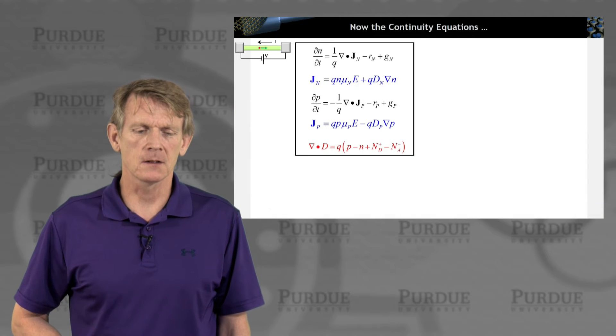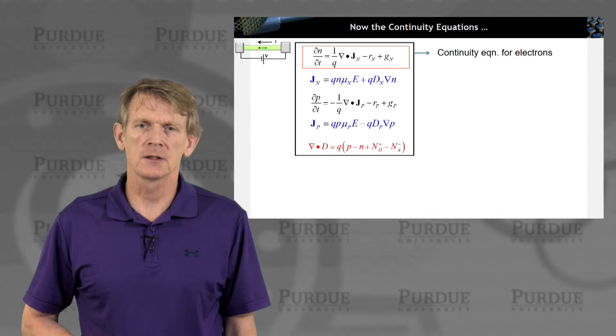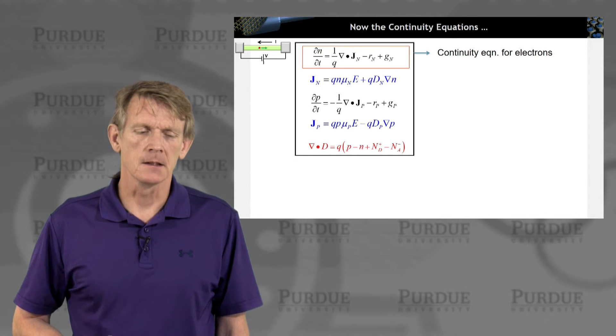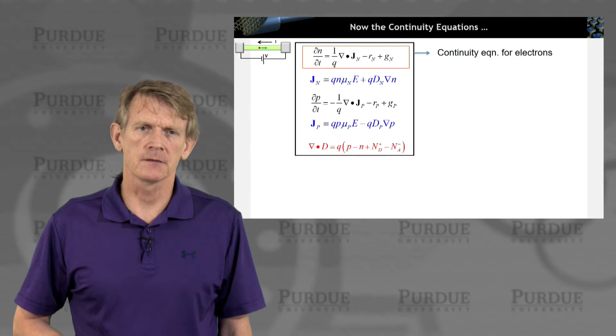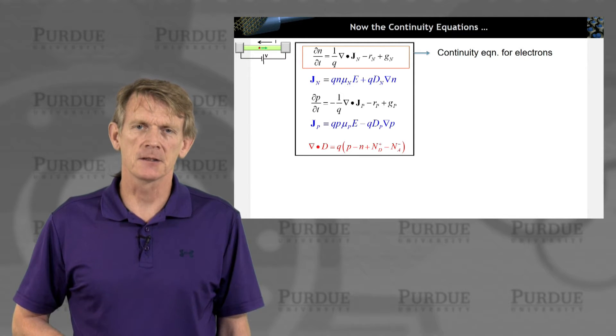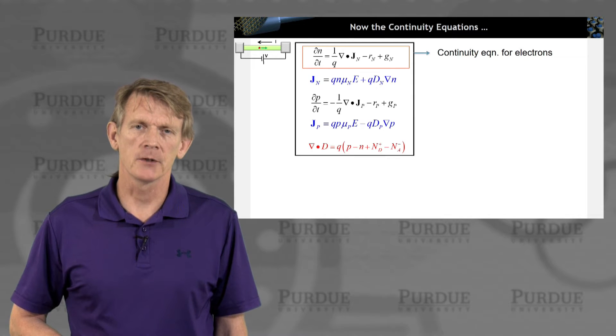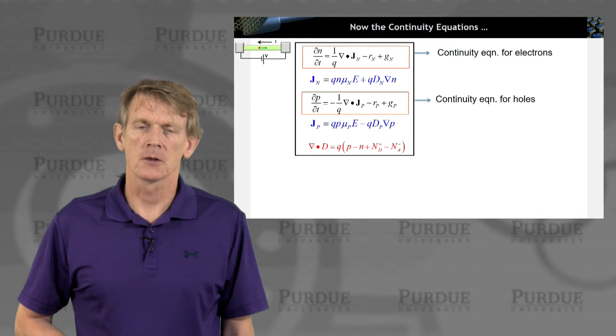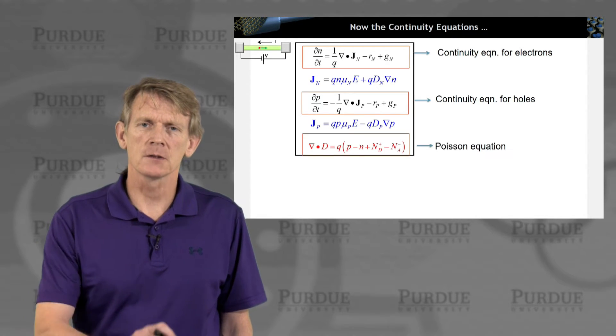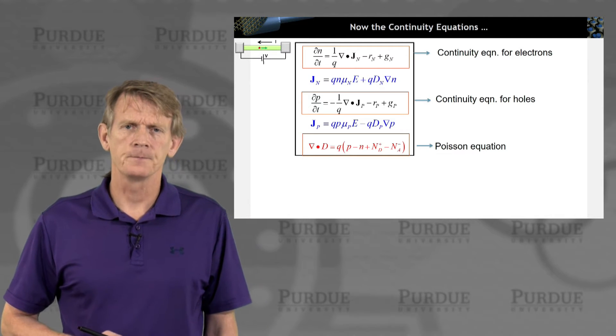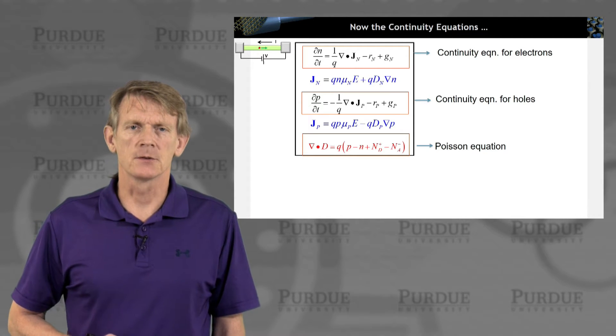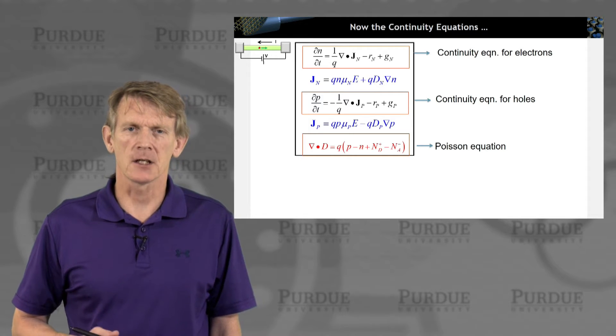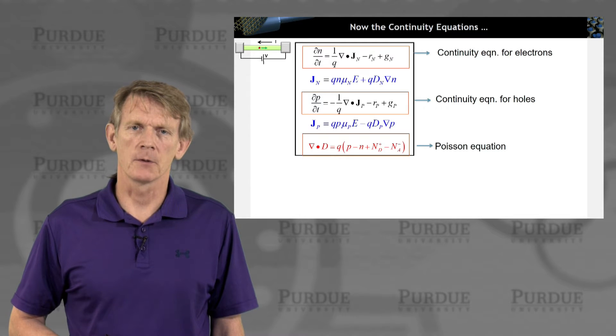So let's start out with these equations here. There is the continuity equation for electrons. We have derived it that relates the change of electrons as a function of time to a spatial change of the current density and recombination and generation. The equivalent term is the continuity equation for holes. The Poisson equation here at the bottom is really Gauss's law, and we adopted to the semiconductor world where we talk about holes, electrons, donors, and acceptors as the charges that we consider in this Poisson equation.